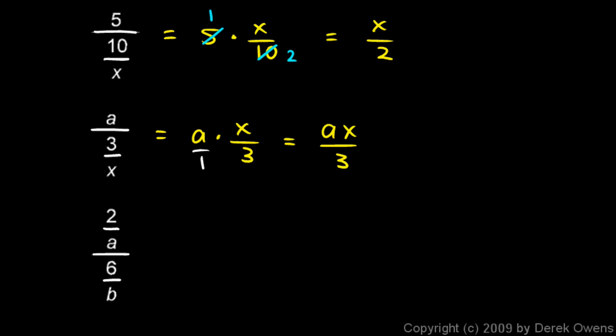Okay, this next example. Two divided by a, or two over a, that fraction, divided by this fraction, six over b. Well, think of it as this thing divided by that thing. And dividing by that thing is the same as multiplying by the reciprocal of that thing. So I'm going to keep my two over a the same. Don't flip that over. Two over a divided by six over b is the same as two over a times b over six.